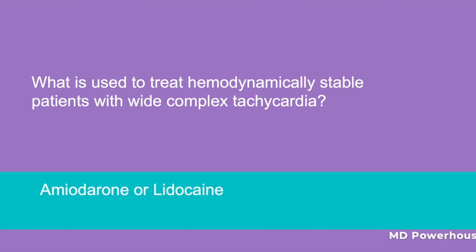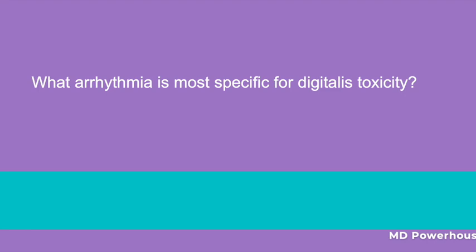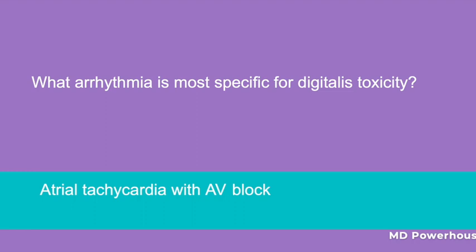What arrhythmia is most specific for digitalis toxicity? Atrial tachycardia with AV block. Recall that digitalis increases ectopy in the atria and ventricles, leading to atrial tachycardia. There is also an increase in vagal tone and decreased conduction at the AV node, leading to AV block.